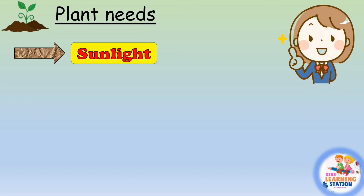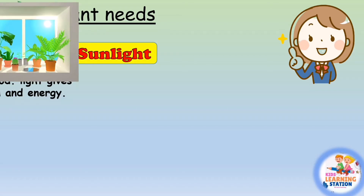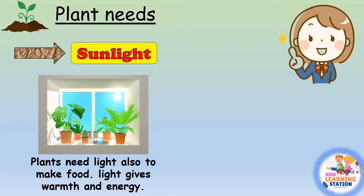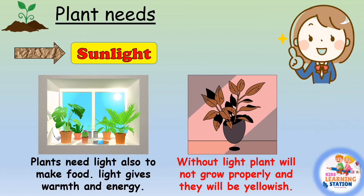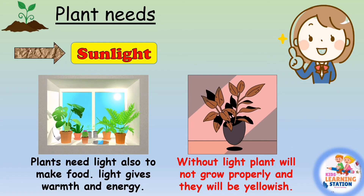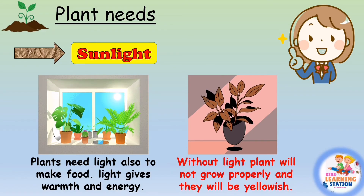Sunlight is very important for plants. Plants need light to make food — light gives enough warmth and energy to plants. If it is too hot, the plant will dry out and die, so they require a moderate temperature to grow. Without light, a plant will not grow properly and will turn yellowish and brownish instead of green.